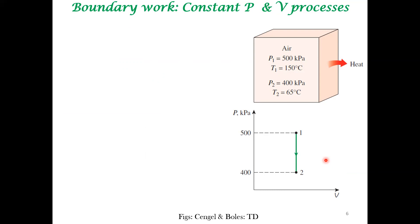We will look at different cases to compute boundary work. First is a constant volume process. Here you have a container with a rigid wall allowing heat interaction but no volume change. Even though pressure changes — for example decreasing when heat leaves the system through a rigid wall — the change in volume is zero, so the PDV work is zero.